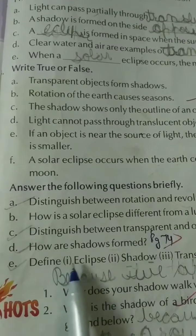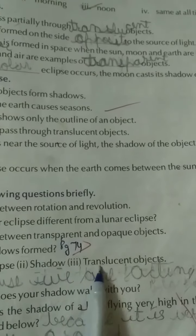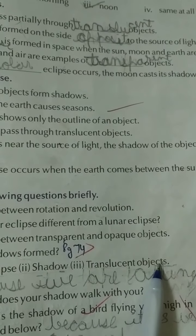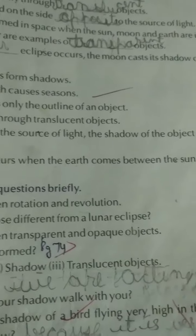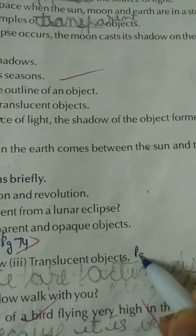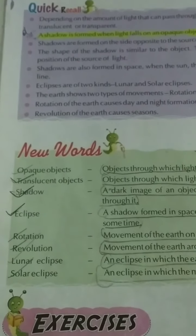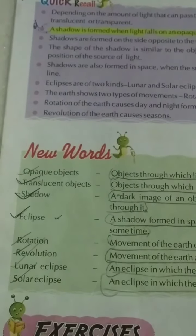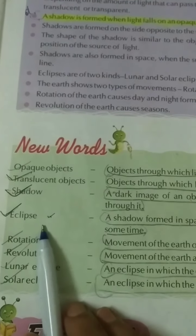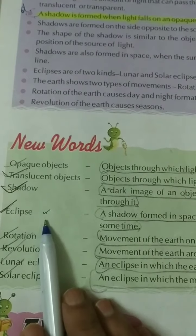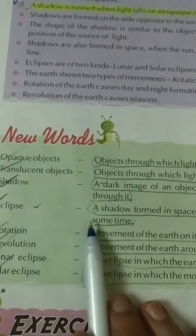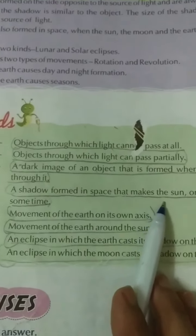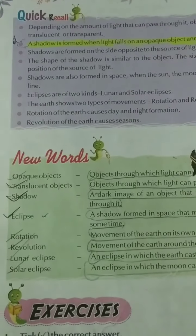Part E: Define eclipse, shadow, translucent object. Page number 74, new words, fourth point. Eclipse: It is definition for first part. A shadow formed in space that makes the sun or moon invisible for some time.